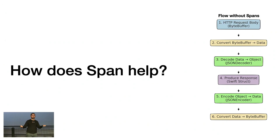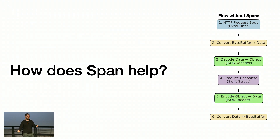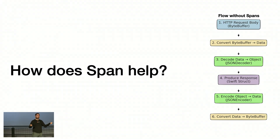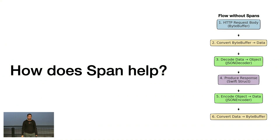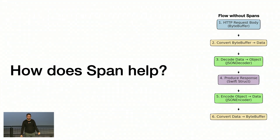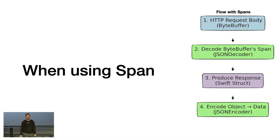How does Span help? This is a typical flow in Hummingbird or Vapor web apps. Your request has some binary data in a ByteBuffer and you want to decode some data, like JSON. What you do is convert it to Data because Foundation only supports it, then put the data into the parser. Here you're making one copy from ByteBuffer to Data, and then Data gets decoded into a struct, which makes another copy. Then finally you make your response: you encode your struct to JSON Data, and then convert it back to ByteBuffer so Vapor or Hummingbird can write it to a socket. That's a bit of a waste, especially when you care about benchmarks — you don't want to do double the work for everything.